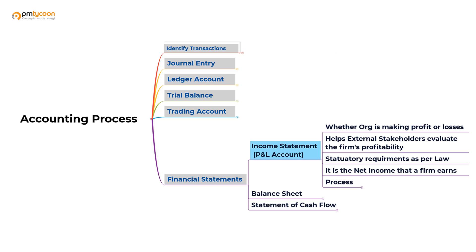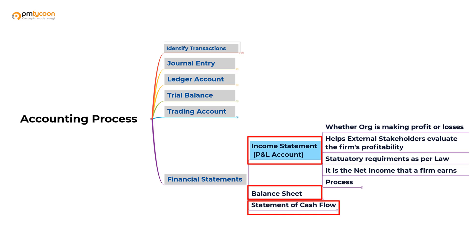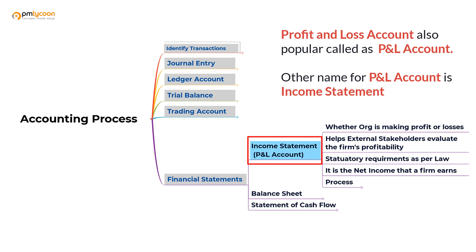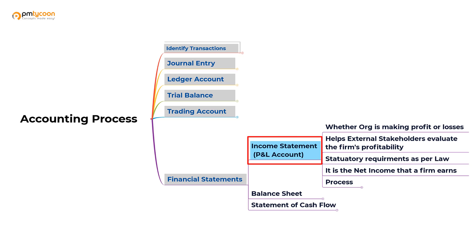There are many financial statements, but primarily the important ones are: the profit and loss account, also known as the income statement; the balance sheet; and the cash flow statement. Let's start with the profit and loss account, which is also referred to as the P&L account.